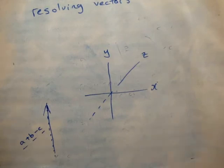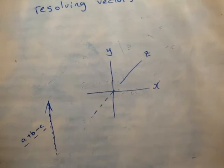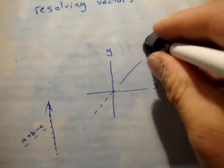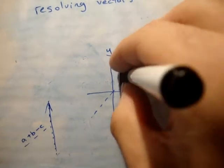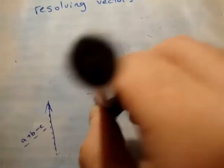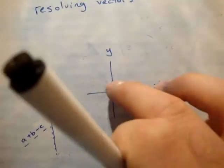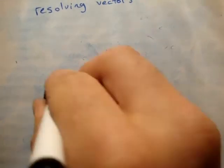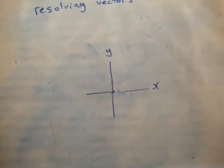Your resultant vector could be acting in any of those axes — it could be in all three axes at the same time. For now I'm just going to deal with X and Y; it's the exact same process for Z but adding Z might just confuse things. So let's draw a vector.